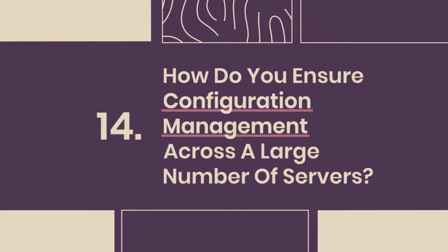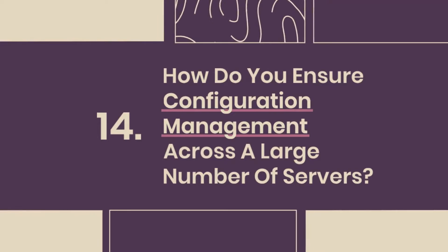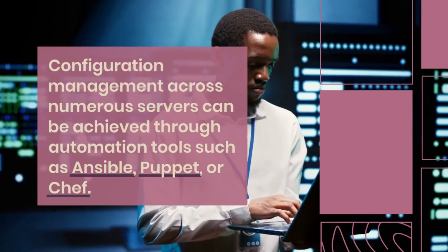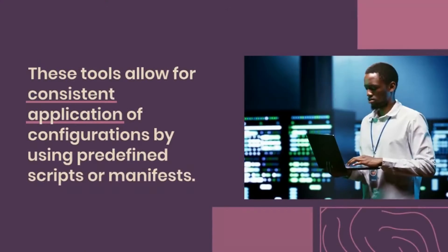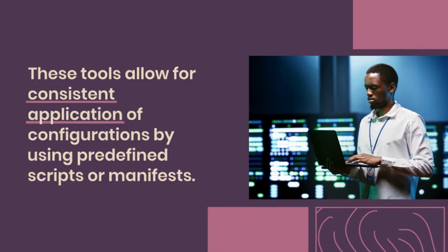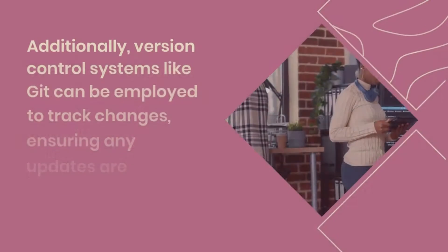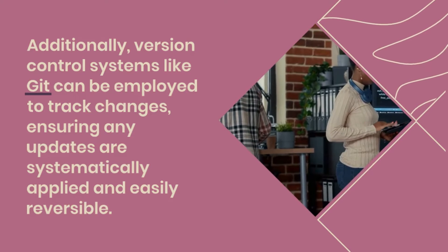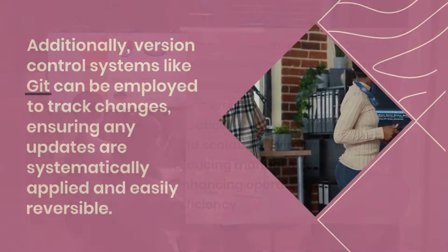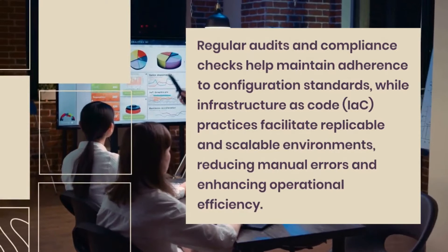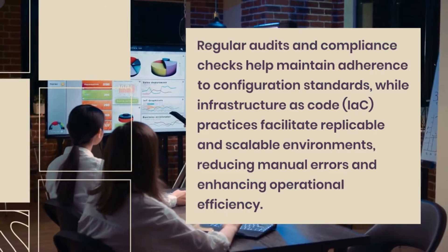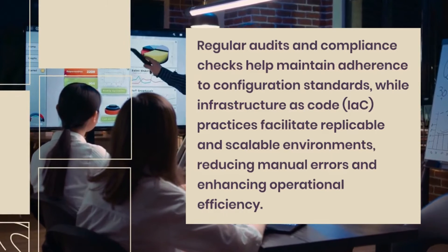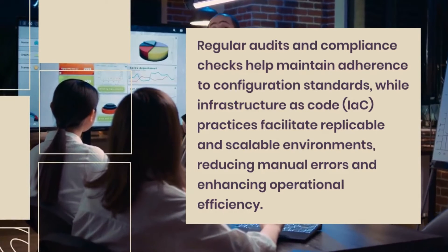Question 14: How do you ensure configuration management across a large number of servers? Configuration management across numerous servers can be achieved through automation tools such as Ansible, Puppet, or Chef. These tools allow for consistent application of configurations by using predefined scripts or manifests. Additionally, version control systems like Git can be employed to track changes, ensuring any updates are systematically applied and easily reversible. Regular audits and compliance checks help maintain adherence to configuration standards, while Infrastructure as Code (IAC) practices facilitate replicable and scalable environments, reducing manual errors and enhancing operational efficiency.